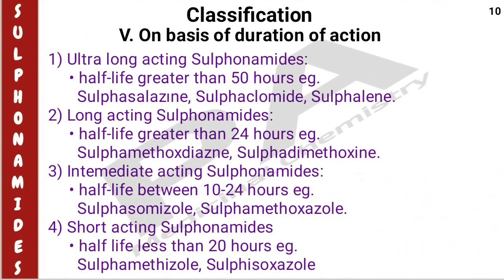On the basis of duration of action, sulfonamides are classified into four types: ultra-short acting, short acting, intermediate acting, and long acting. Ultra-short acting sulfonamides have a half-life greater than 50 hours — examples are sulfasalazine and sulfalene. Long-acting sulfonamides have a half-life greater than 24 hours — examples are sulfamethoxydazine and sulfadimethoxine. Intermediate-acting sulfonamides have a half-life of 10 to 24 hours — examples are sulfamoxole and sulfamethoxazole. Short-acting sulfonamides have a half-life less than 20 hours — examples are sulfamethoxazole and sulfisoxazole.